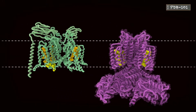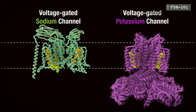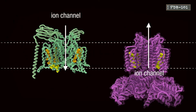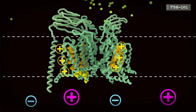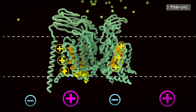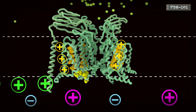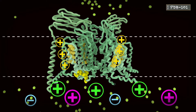In neurons, voltage-gated ion channels act as gatekeepers for ion traffic across the membrane. Thanks to their voltage-sensing domains, these channels open and close in response to changes in membrane voltage.